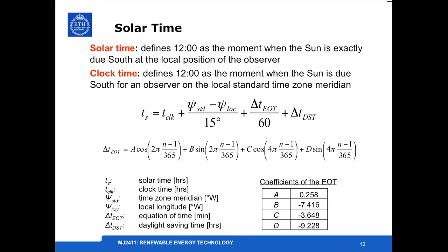The relation between these two is easy to calculate by one expression shown in this slide. Solar time is just the clock time with some additional correction factors. One regarding the difference between the actual position and the standard meridian, one which is called the equation of time, which is a correction for the elliptical movement of the Earth.